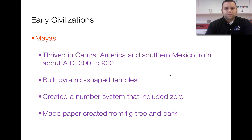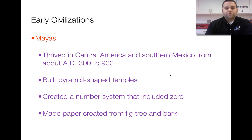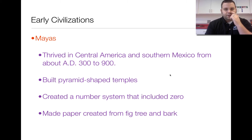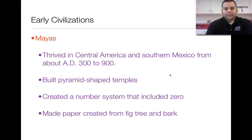They built pyramid-shaped temples with four sides that came to a point at the top. They also created a number system that included zero — and zero is important because it's a place marker that shows where you have nothing. And lastly, they created paper from fig tree bark. It's fibrous in nature, more rough and textured, but something they could easily make.